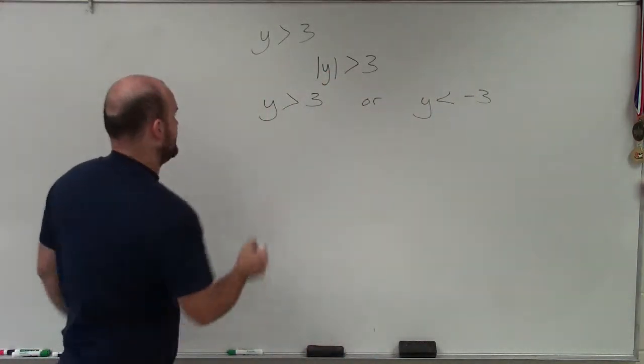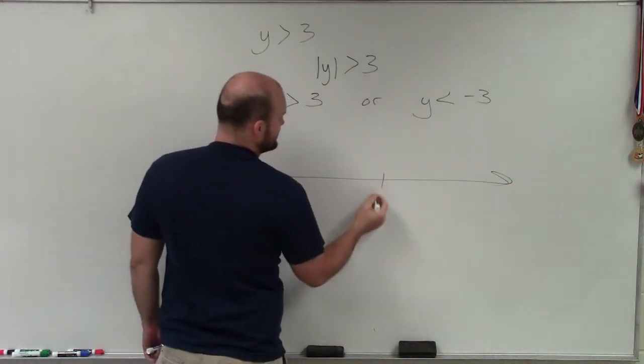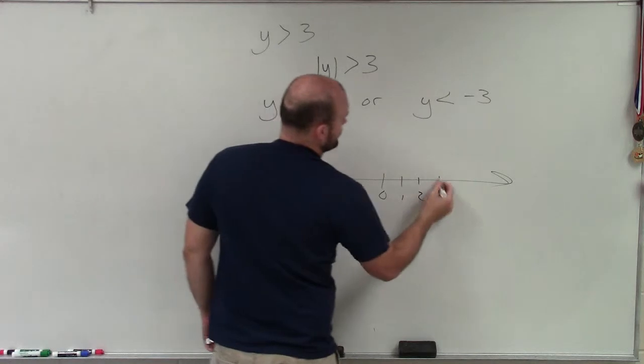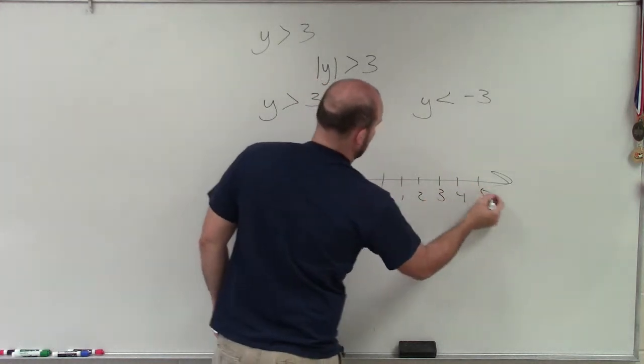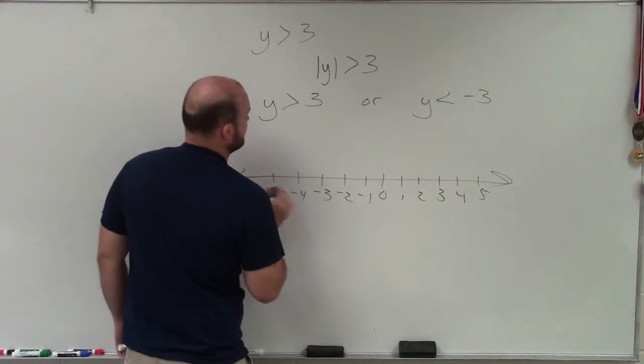So now I simply just go ahead and graph on my number line axis. So I need to make sure I include 3 and negative 3. So I have 0, 1, 2, 3, 4, 5, negative 1, negative 2, negative 3, negative 4, negative 5.